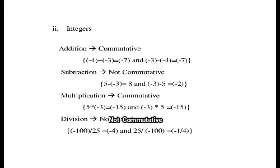In multiplication, multiplication is also commutative for integers. For example, 5 into minus 3 equals minus 15 and minus 3 into 5 equals minus 15. In division, it is not commutative. Minus 100 divided by 25 gives minus 4, but 25 divided by minus 100 equals minus 1 by 4. So division is not commutative.